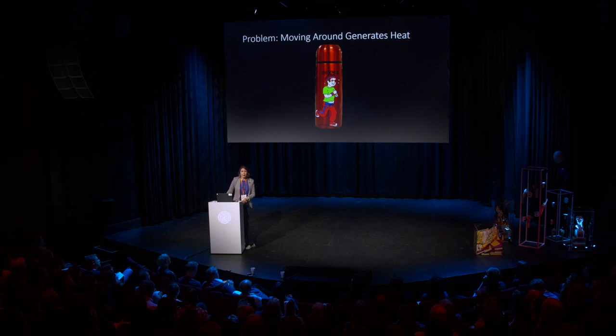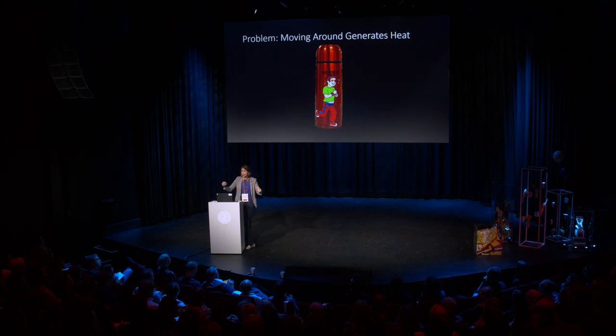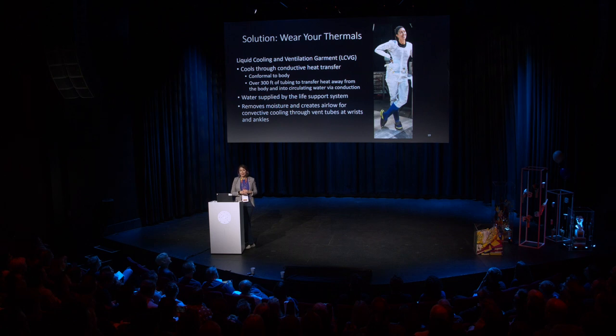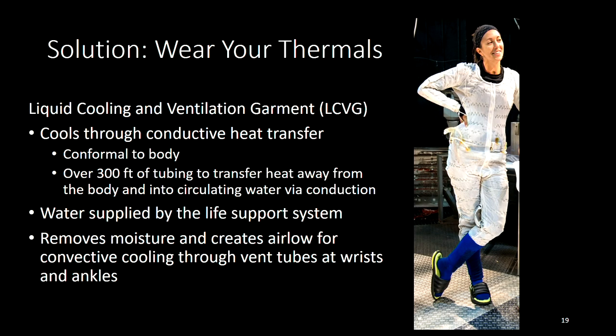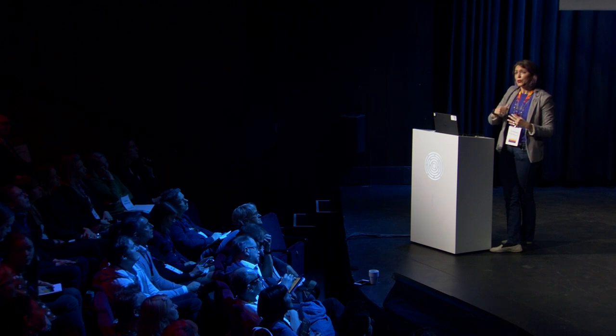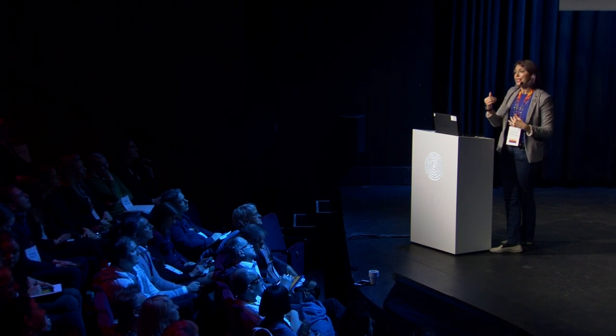But this creates another problem: now that you've isolated yourself from the environment, you're building up a lot of heat from muscle work inside the spacesuit — it's kind of like working in a thermos. What we do is use a liquid cooling garment: a very conformal white spandex layer with about 200 feet of tubing. That tubing has cold water running directly against your skin, and through conduction it picks up all the heat from your body and rejects it through a heat exchanger in the back of your spacesuit. You can adjust how much flow goes through the cooling garment — the more flow, the more heat you pull from your skin.